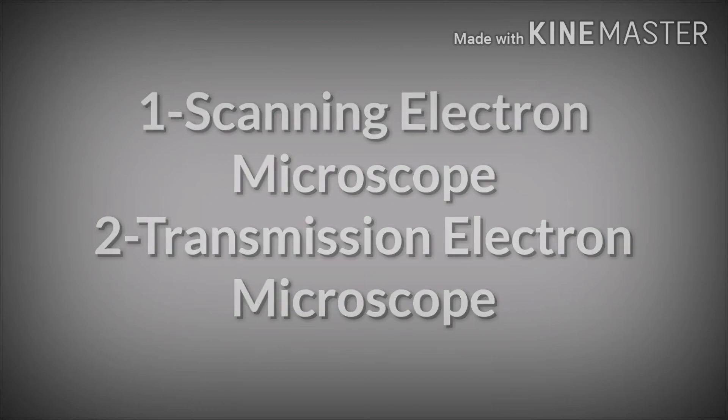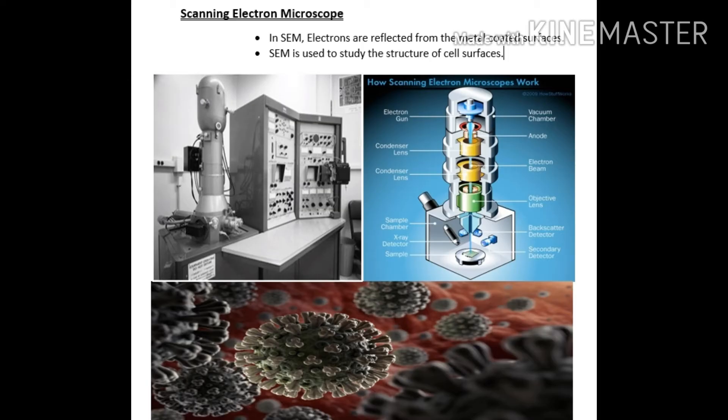Scanning Electron Microscope mein jab kisi specimen ki observation karni hogi toh us specimen ke upar hum metal ki coating kar denge, taake is mein se electrons transmit na ho sakein balke surface se hi reflect ho jayen aur hume surface ki diagram nazar aaye. Scanning — naam se hi pata chal raha hai ke yeh scan karegi aur upar wali surface hi dikhayegi. Jaise COVID-19 ka ek virus dikhaaya gaya hai jo SEM se liya gaya hai — us mein bahar wali saari surface nazar aa rahi hai.